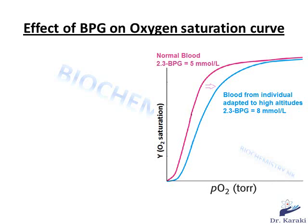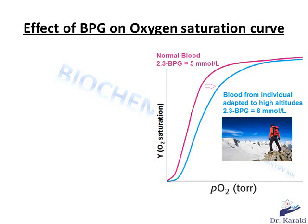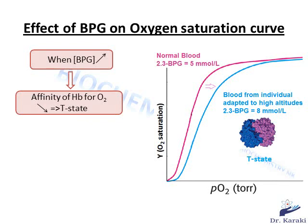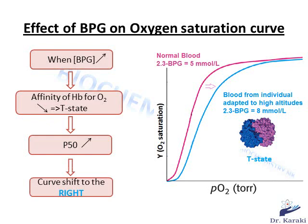Let's see how the binding of BPG to hemoglobin influences the oxygen saturation curve. We have two curves: the pink curve is for a person at sea level with a BPG concentration of 5 mmol/L, and the blue curve is for a person adapted to high altitude with BPG equal to 8 mmol/L. When the concentration of BPG increases from 5 to 8 mmol/L, the curve shifts to the right, the affinity of hemoglobin for oxygen decreases, T state is stabilized, and P50 increases. When BPG concentration decreases, the curve shifts to the left and the R state is stabilized.